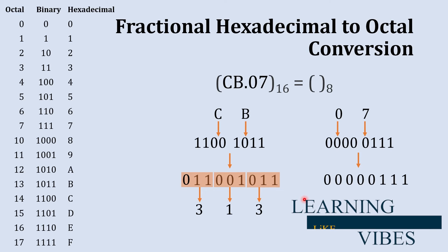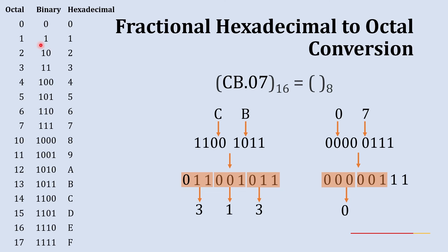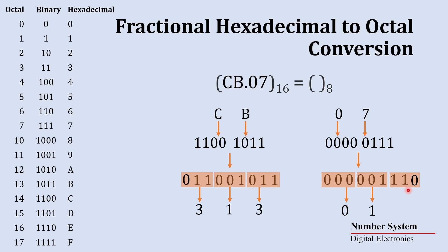Now we convert this binary fraction back into octal using sets of three digits, starting from the left. The first set is 000, which is 0 in octal. The next set is 001, which is 1 in octal. We have only two digits remaining, so we add one zero to make the set 110, which is 6 in octal.